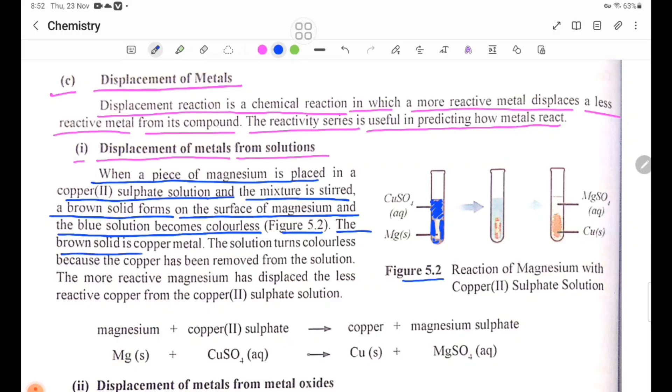The brown solid is the copper metal. The solution turns colorless because the copper has been removed from the solution.